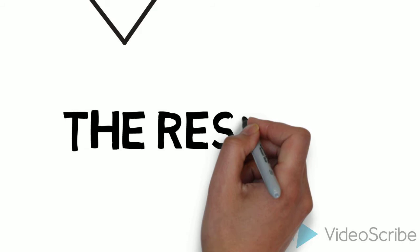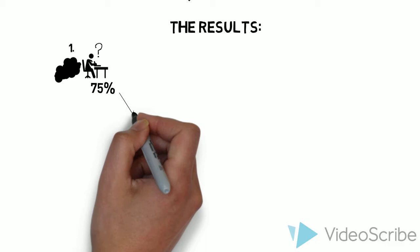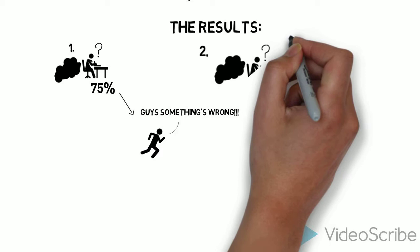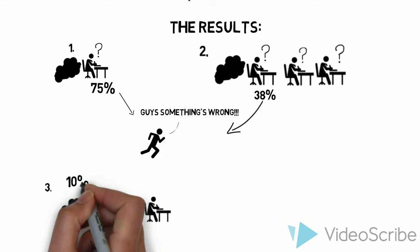So how many subjects reported the smoke? The result of the experiment was, 75% of the alone subjects left the room to report the smoke in an average time of two minutes, 38% in the second condition reported, and only 10% in the last condition took action.